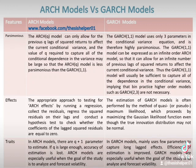The appropriate approach to testing for ARCH effects is by running a regression, collecting the residuals, regressing the squared residuals on their lags, and conducting a hypothesis test to check whether the coefficients of the lagged squared residuals are equal to zero. Whereas the estimation of GARCH models is often performed by the method of quasi-maximum likelihood, which proceeds by maximizing the Gaussian likelihood function even though the true innovation distribution may not be normal.